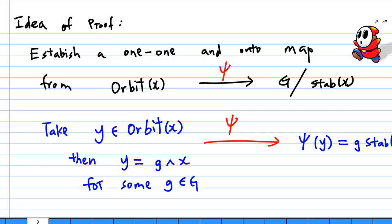I am going to explain the idea of the proof, which is to establish a one-to-one and onto map from the orbit of x to the set of cosets of the stabilizer of x. I call this map psi, and it is established as follows.